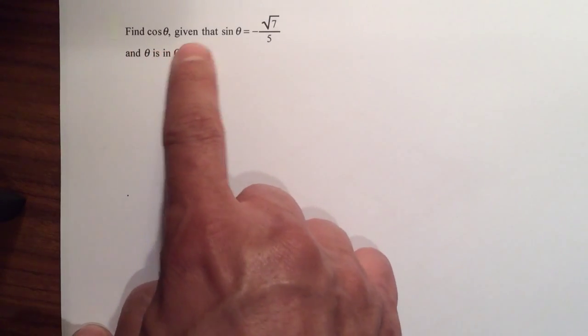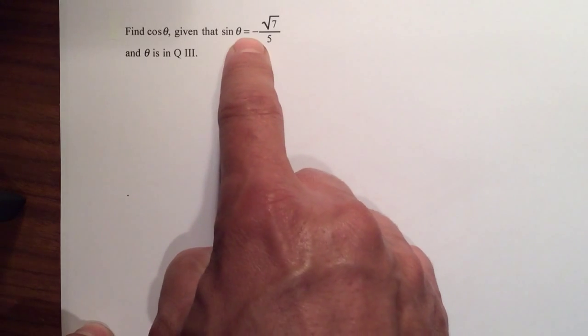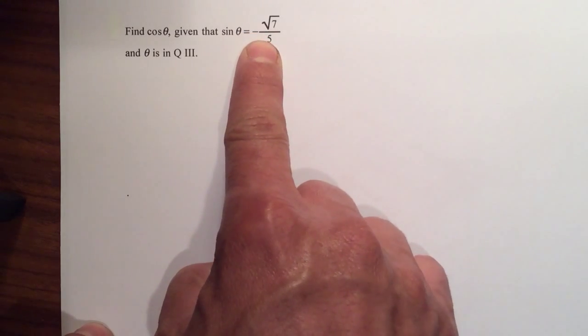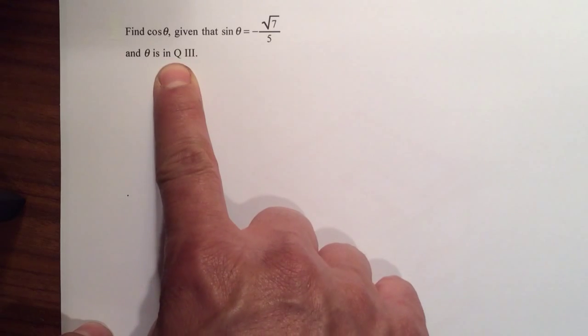Find cosine of theta, given that sine of theta is equal to negative square root of 7 over 5. And it tells you that the angle is in quadrant number 3.